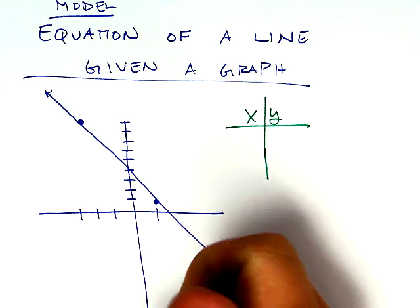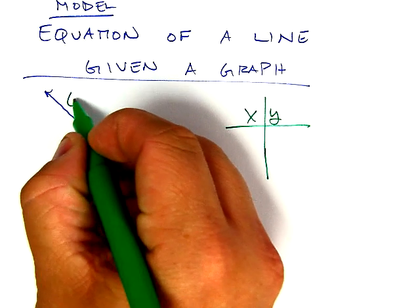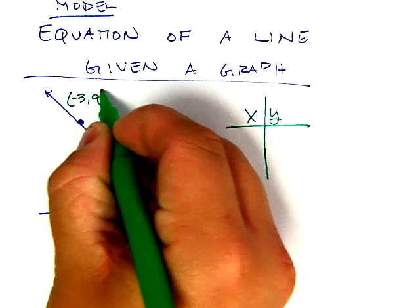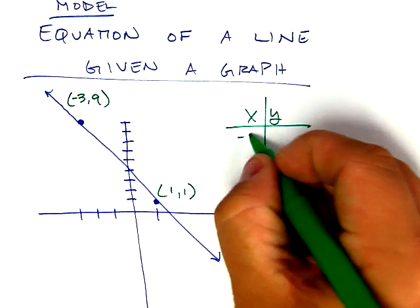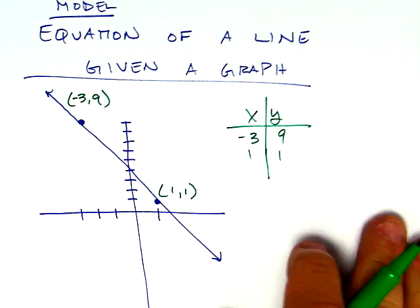So find these point values. They'll always be highlighted on a graph somehow. And so this first one right here you guys can see is negative 3, 9. The second one is 1, 1. So we're going to plug these into our table, our T table.